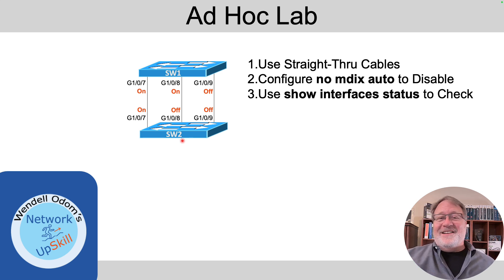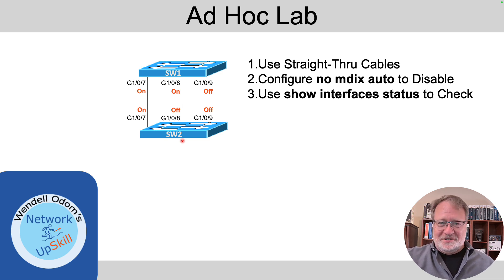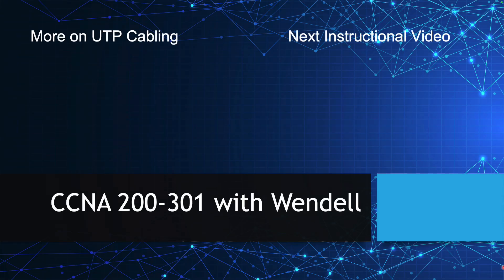It's a pretty short topic. The section in the book, 'Using Auto MDIx on Switch Interfaces', is also short. If you have a couple of Cisco switches, try these commands. You can also do a quick ad hoc lab: take two switches, plug in straight-through cables on three links, turn AutoMDIX off on one end on the middle link and on both ends on the far-right link, leaving it on for the far-left link — the far-right link should fail. You can do exactly that in Cisco Packet Tracer and it works as expected. Hope you enjoyed this one; click the left video to review UTP cabling and pinouts, or the right for the next instructional video on additional interface subcommands.